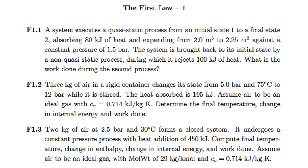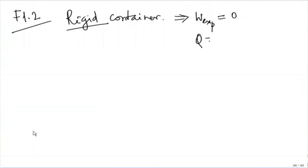In F1.2, first thing - it is a rigid container. Rigid container means W expansion is 0, but that does not mean W is 0. We know the initial state, the final state can be computed, and the heat absorbed is given. Assume air to be an ideal gas. We need to find the final temperature, change in internal energy, and work done. The first law has to be written as Q equals delta E plus W. Q is given - it is absorbed 195 kilojoules.